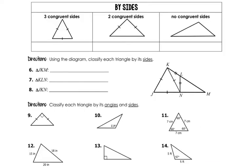And then by sides: three congruent sides means it's an equilateral triangle. And two congruent sides — remember, there are two S's in the word — so it's an isosceles triangle. And if there are no congruent sides, it would be scalene.